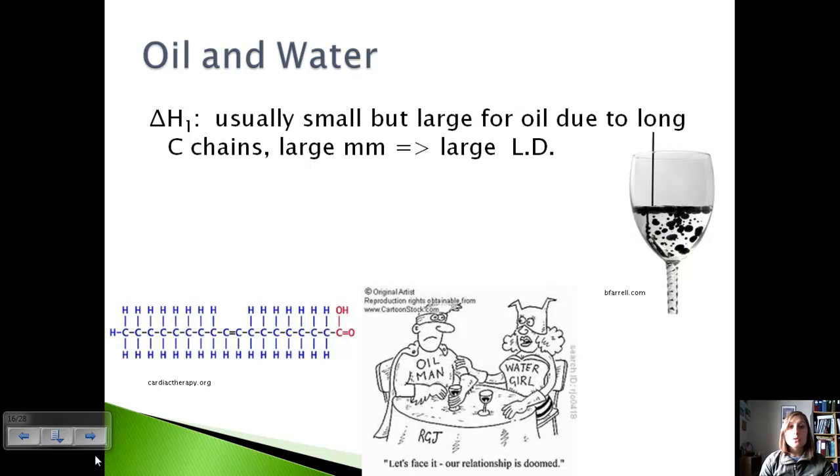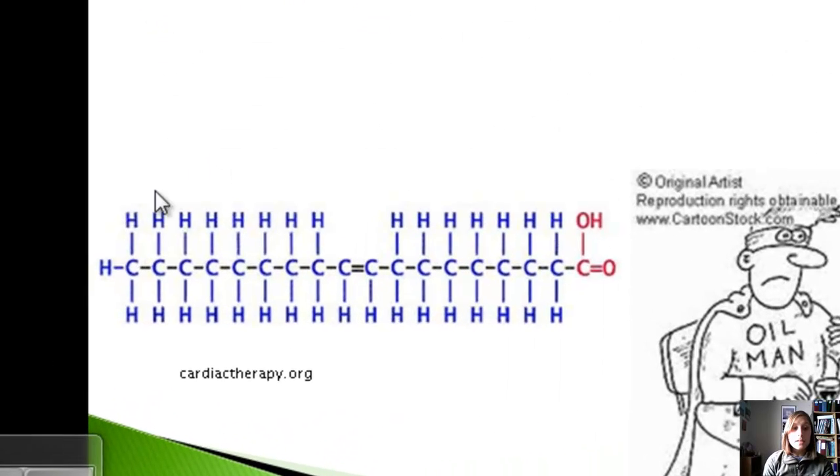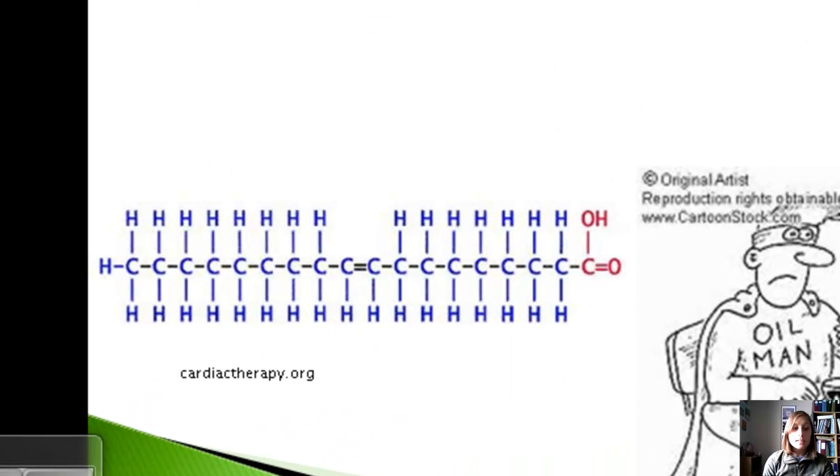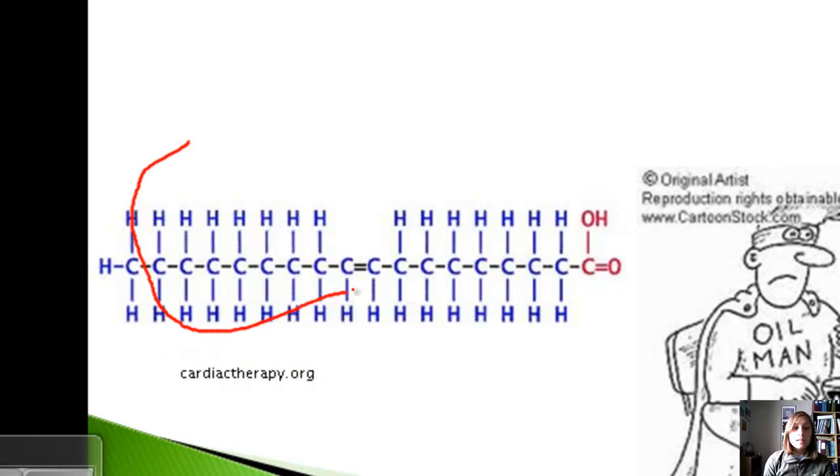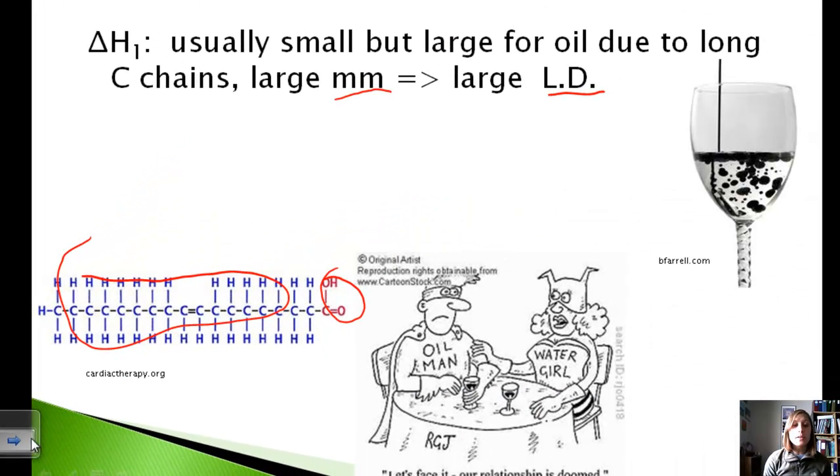This value is usually small, but for oil, it's going to be really large because oil is composed of really long carbon chains. So for example, down here, this is an example of oil. You've got all these really long carbons. Maybe a little functional group on the end here, but overall, lots of hydrogens and carbons. Really large molar mass, which means you're going to have really large London dispersion forces, giving a large value in this case.